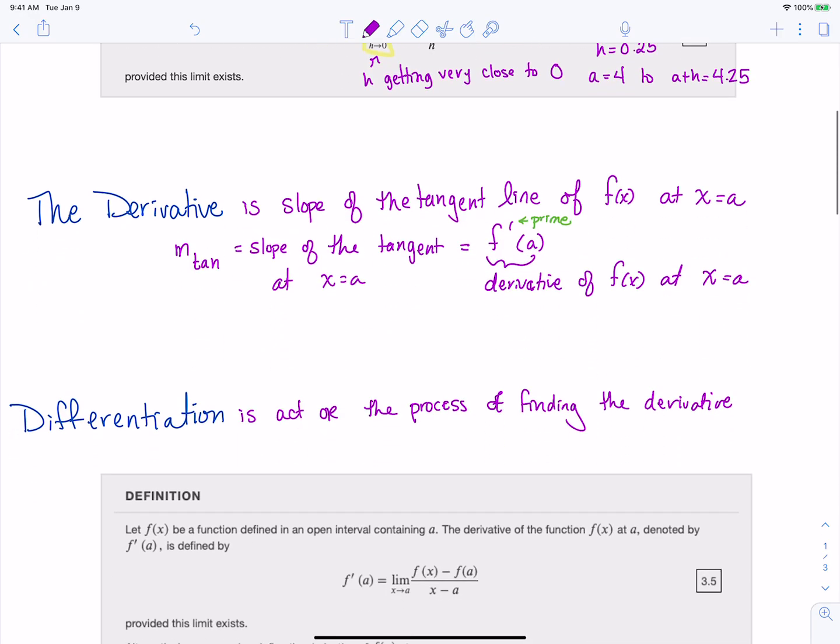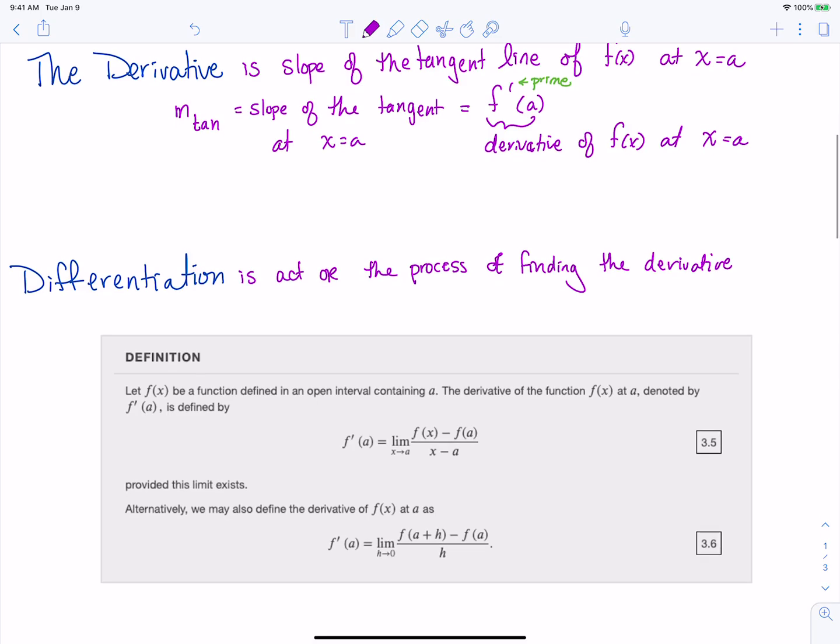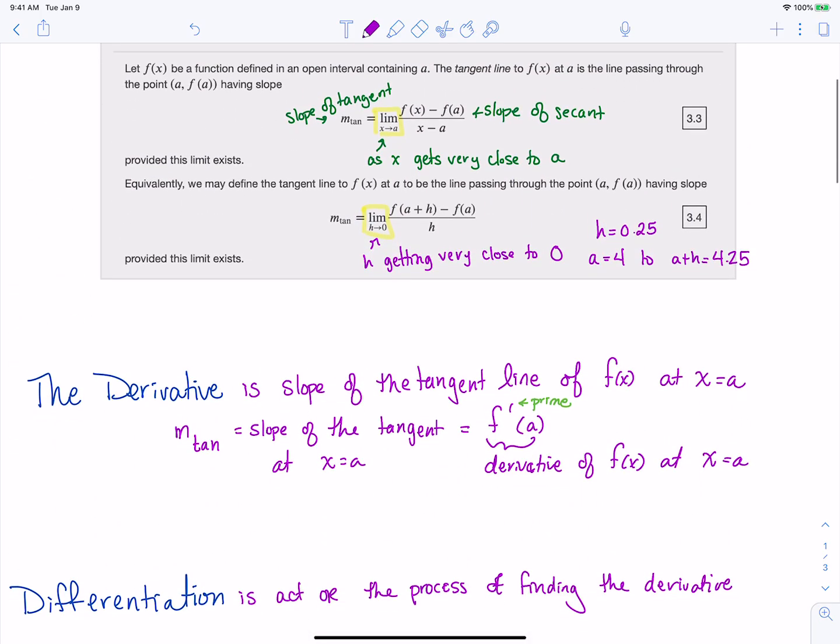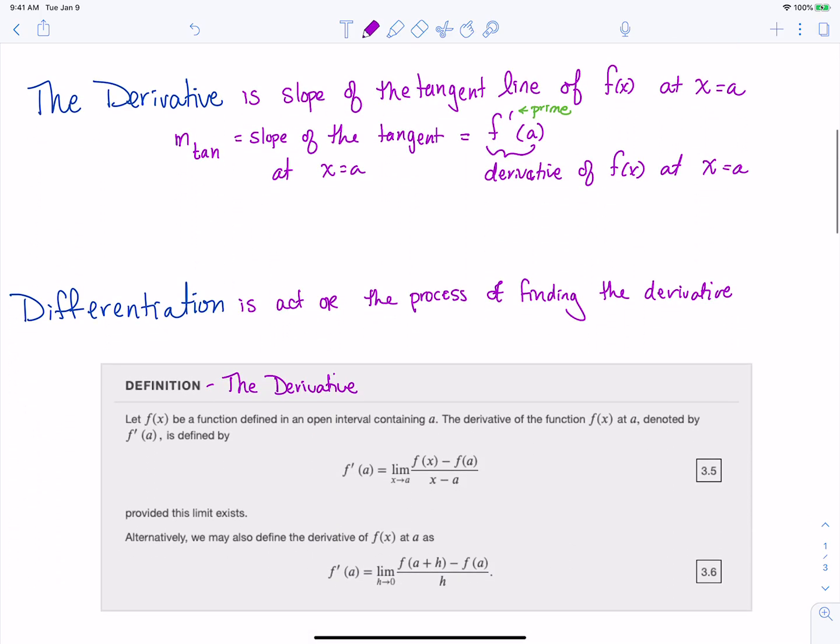This leads us to the definition of the derivative. Notice it's exactly the same as the definition we have up here, except that we've taken that m_tangent and replaced it with that f prime notation, but it's that exact same difference quotient.